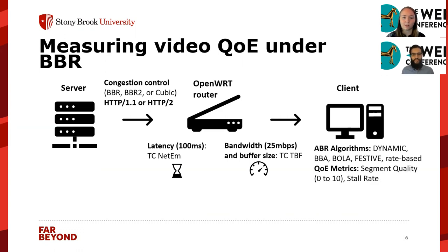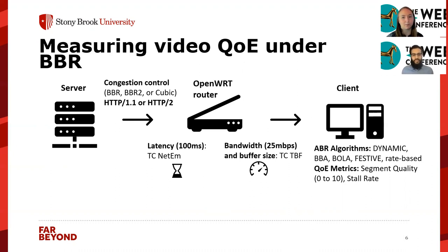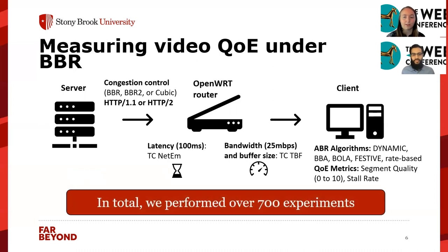On the client, we tested five different ABR algorithms. An ABR algorithm is an adaptive bit rate — the algorithm that DASH players use to choose the quality of the next segment. We collect QoE metrics on the client: segment quality ranges from 0 to 10, with a video encoded at 11 different bit rates evenly spaced. We also collect stall rate, a measure of rebuffering — if stall rate is greater than zero, the client experienced some rebuffering. In total, we performed over 700 experiments covering a wide range of network conditions and application settings.